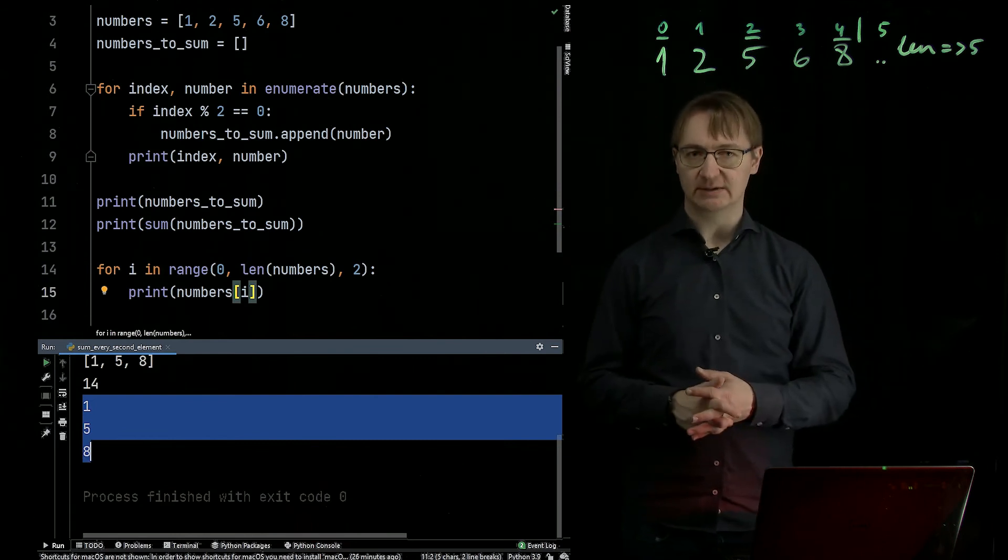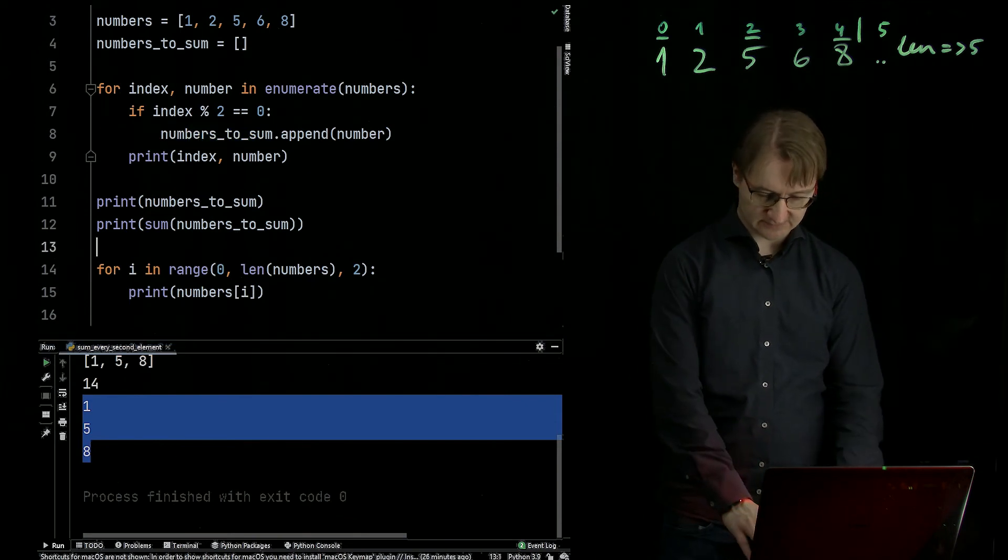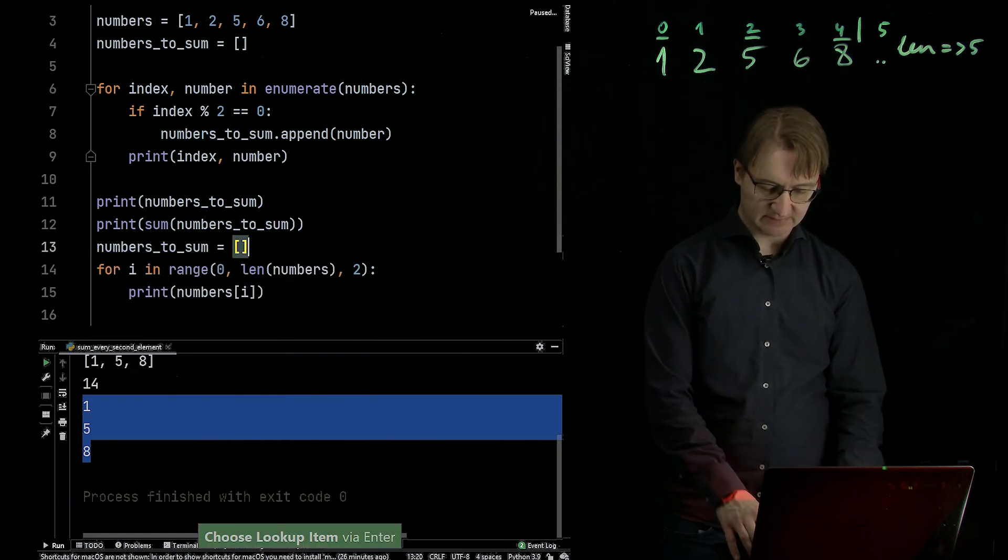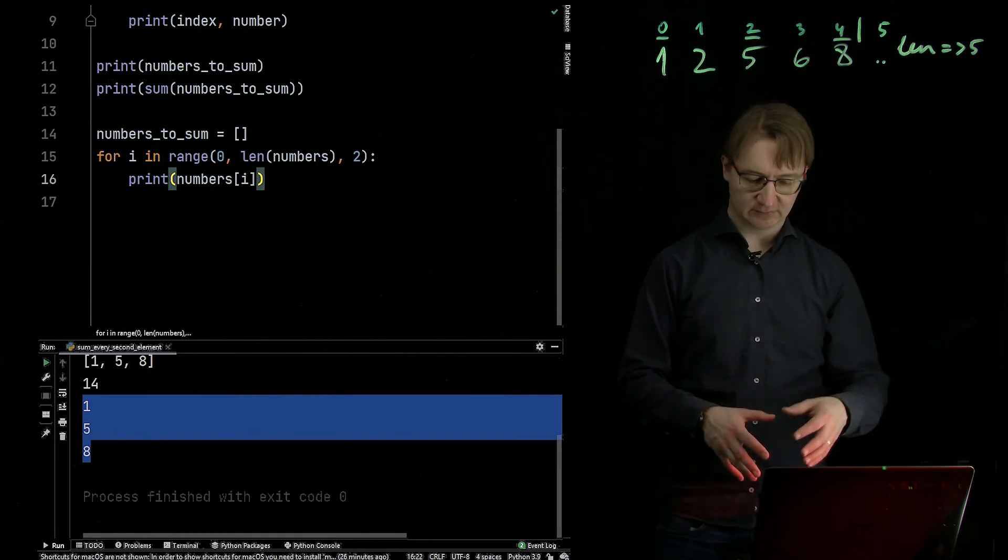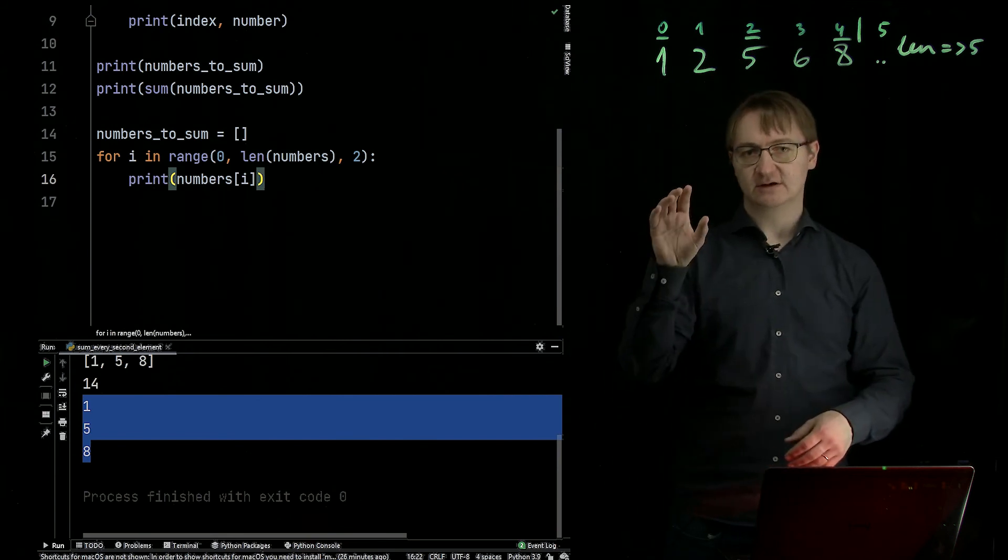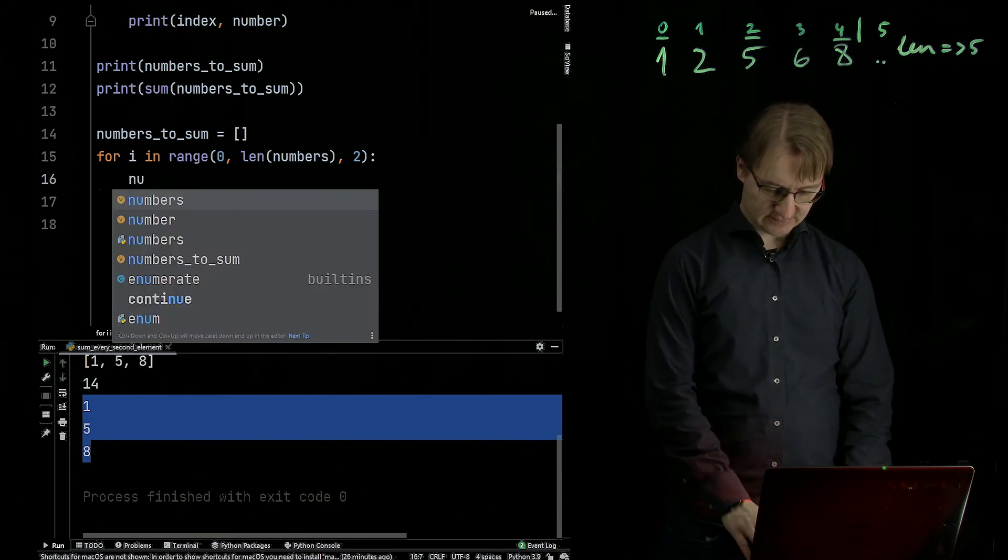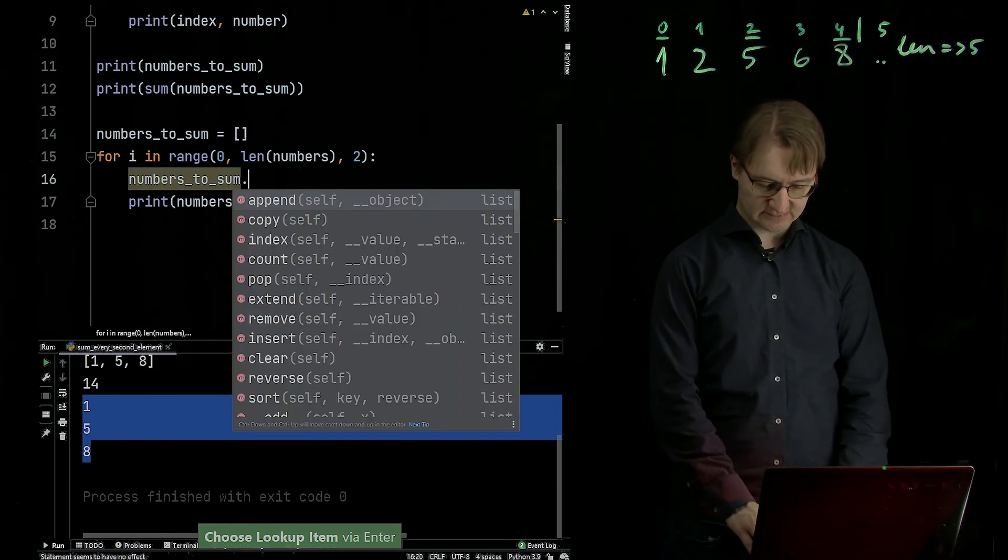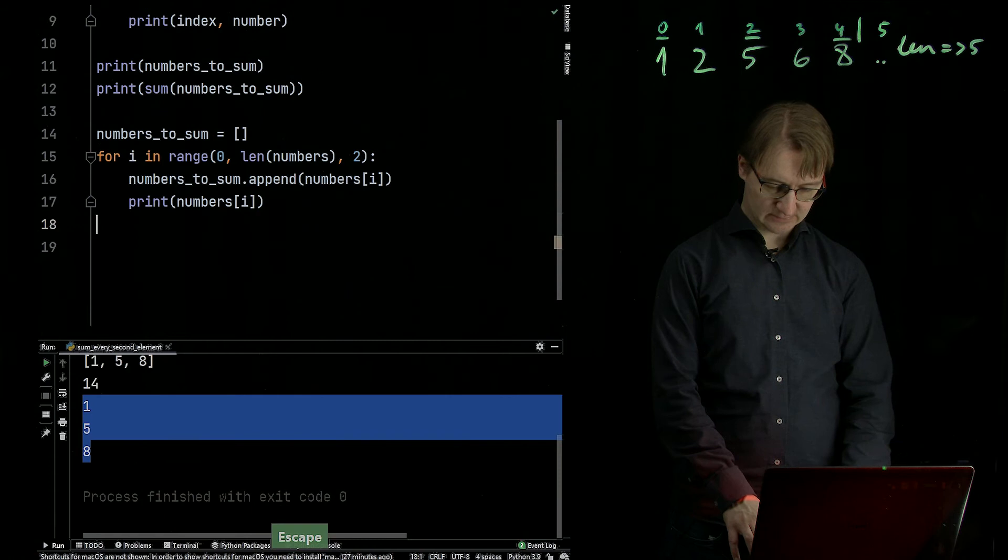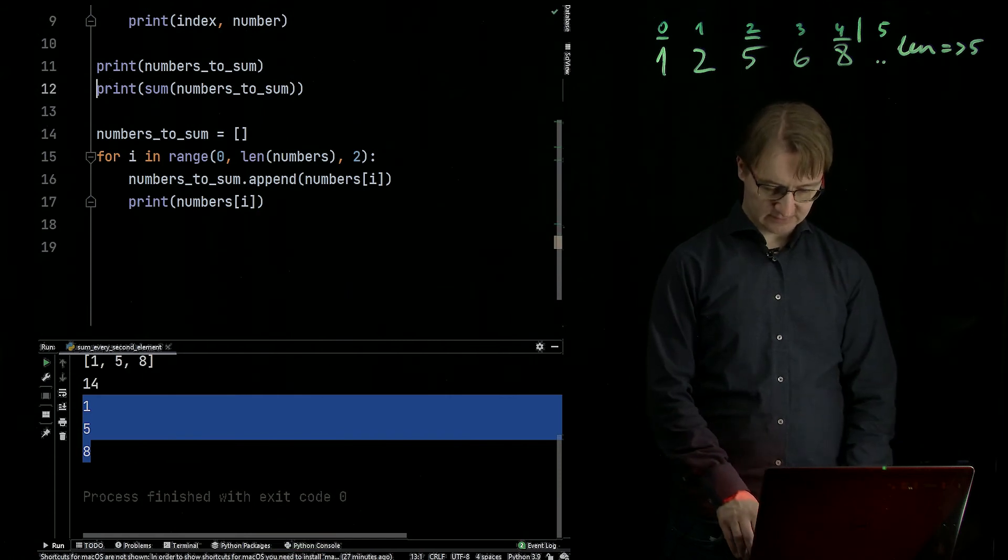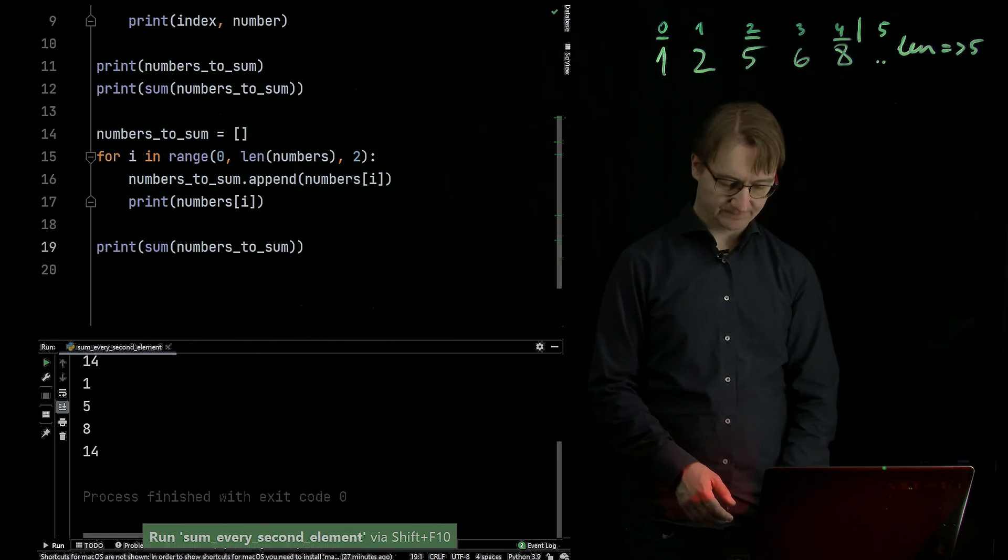And now I can basically do the same that I will probably, for example, add those into the list and then I will sum up the list. So for example, I will use the same list name, but I will just reset. So it's an empty list because otherwise if I add the elements to the same list, I would get the double value for the list. But for now I just created a new list. So it's empty. And now I append numbers at position i. And now I will print out the sum of those elements. And I also get 14. Which is correct.